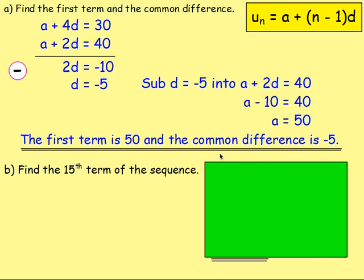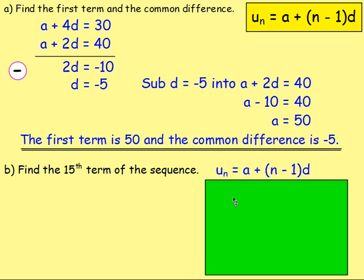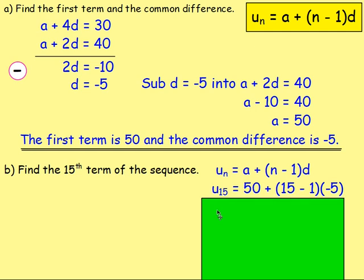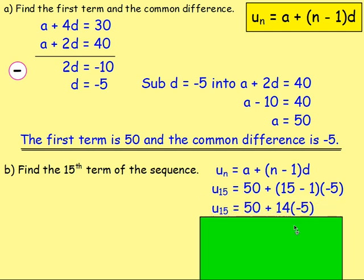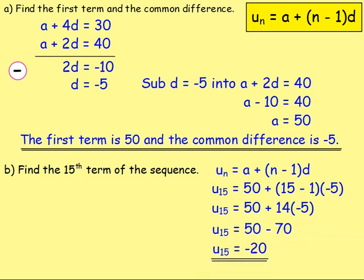Part B: find the 15th term of the sequence. Using u-n equals a plus (n minus 1)d, we want u15. We know a equals 50, d equals negative 5, and n equals 15. So: 50 plus (15 minus 1) times negative 5 = 50 plus 14 times negative 5 = 50 minus 70 = negative 20. The 15th term is negative 20.